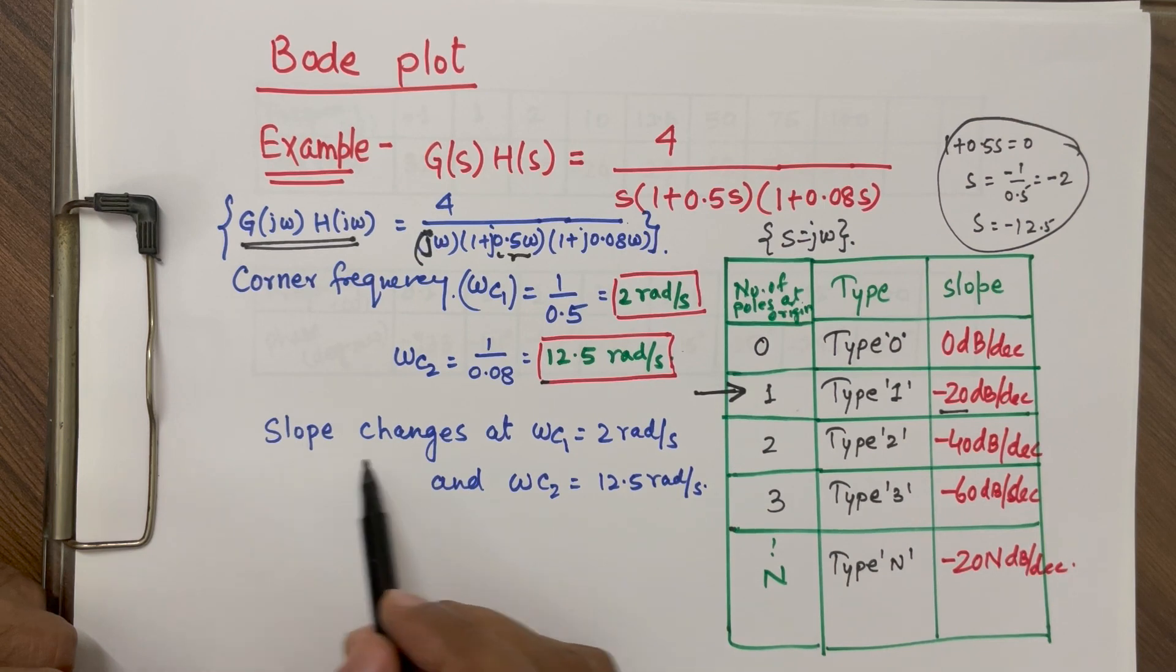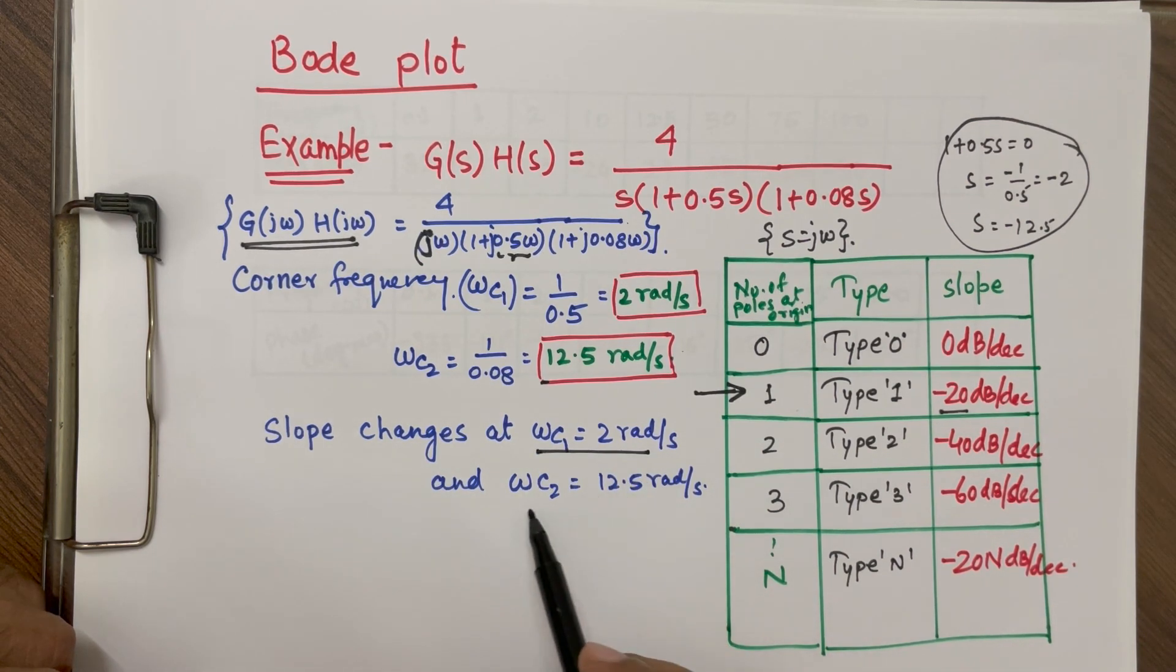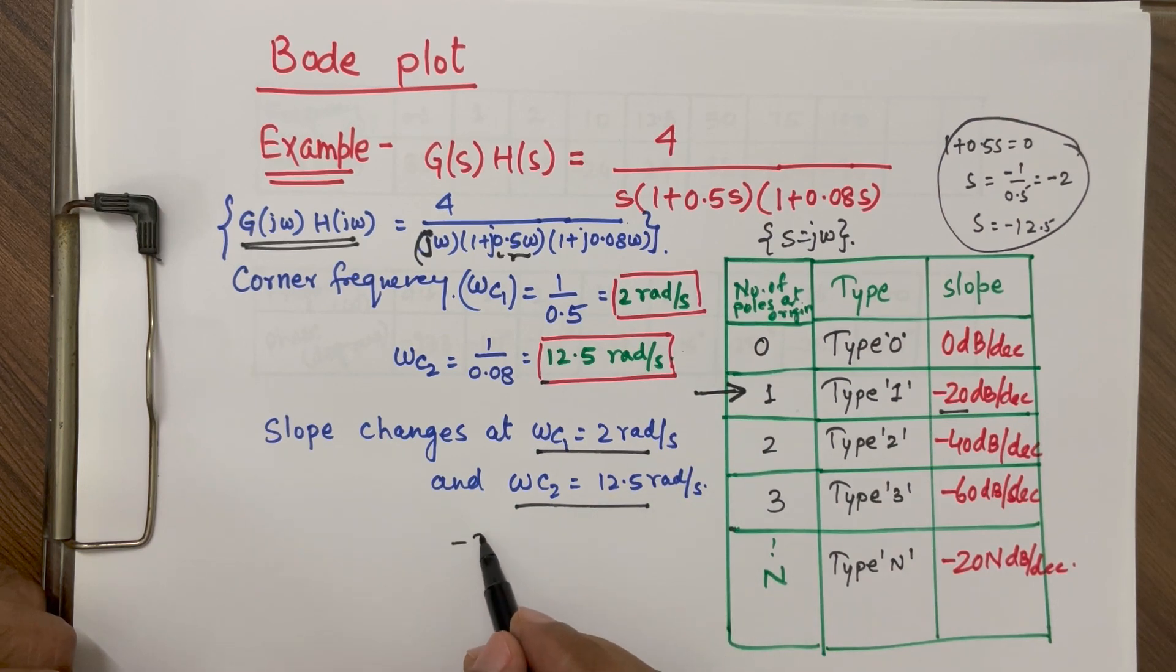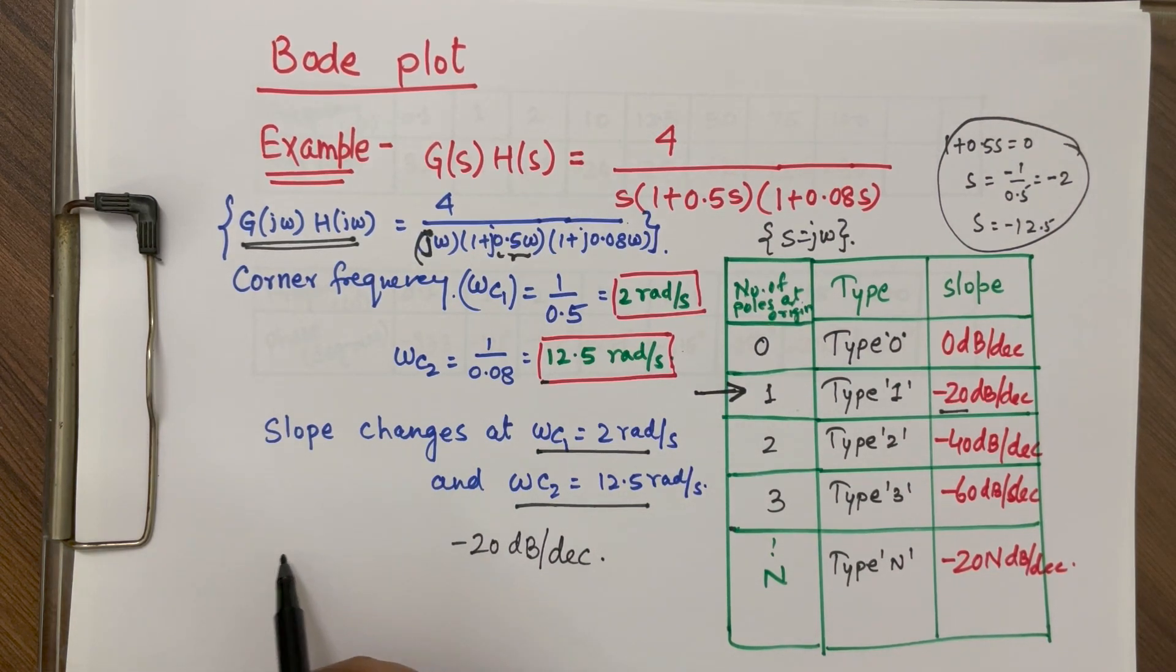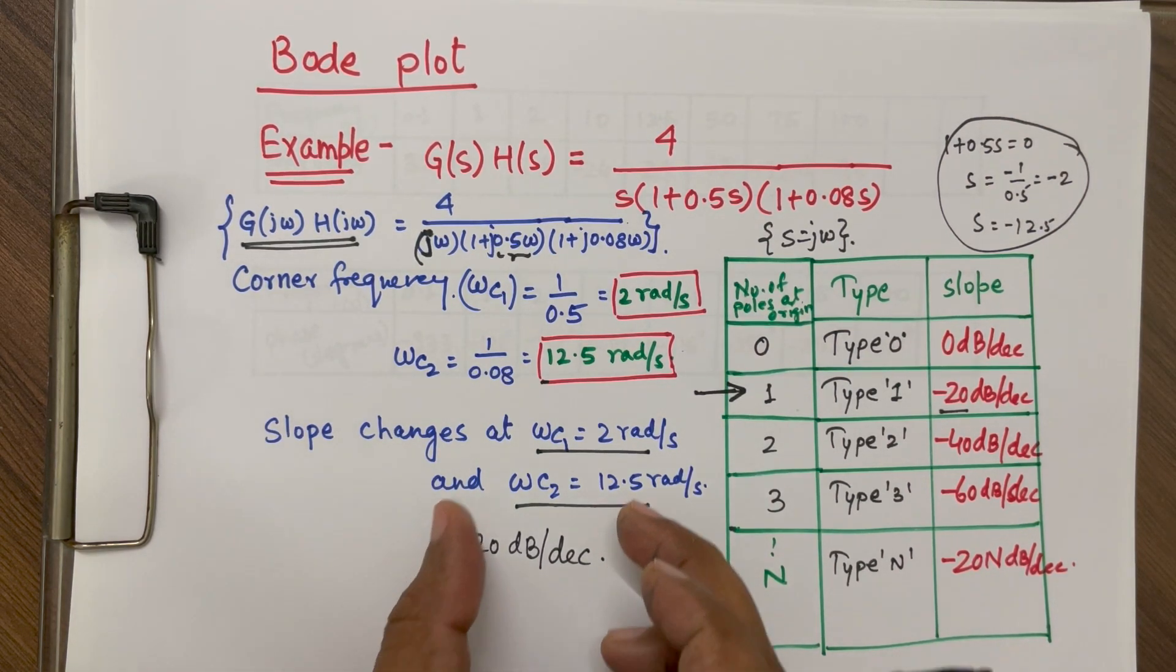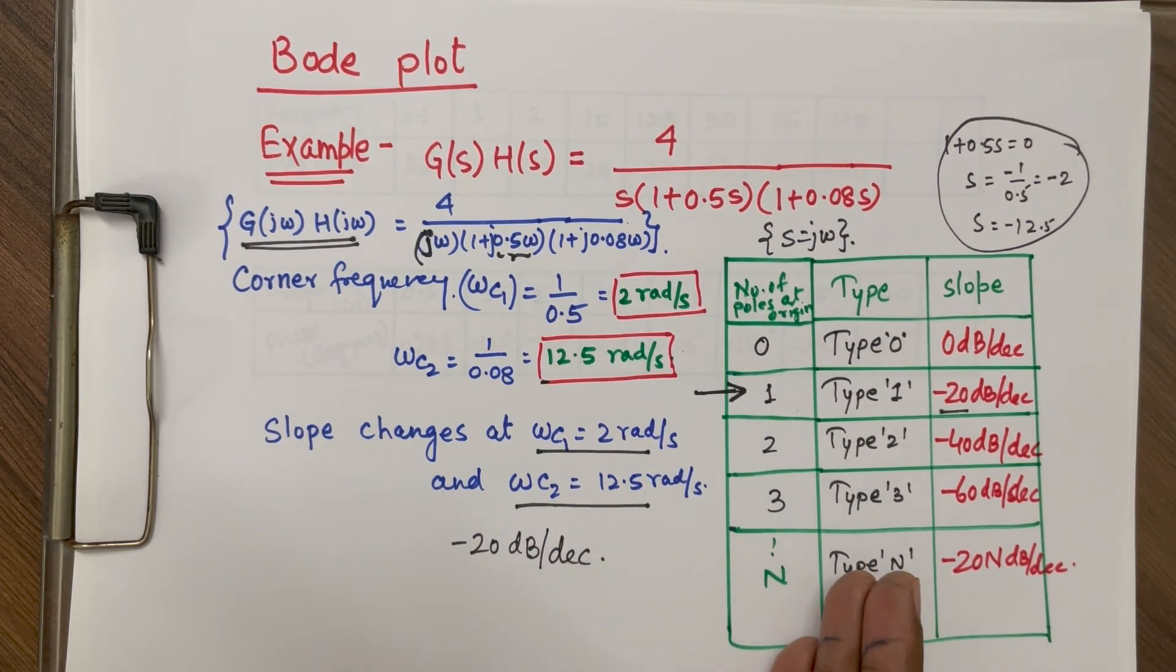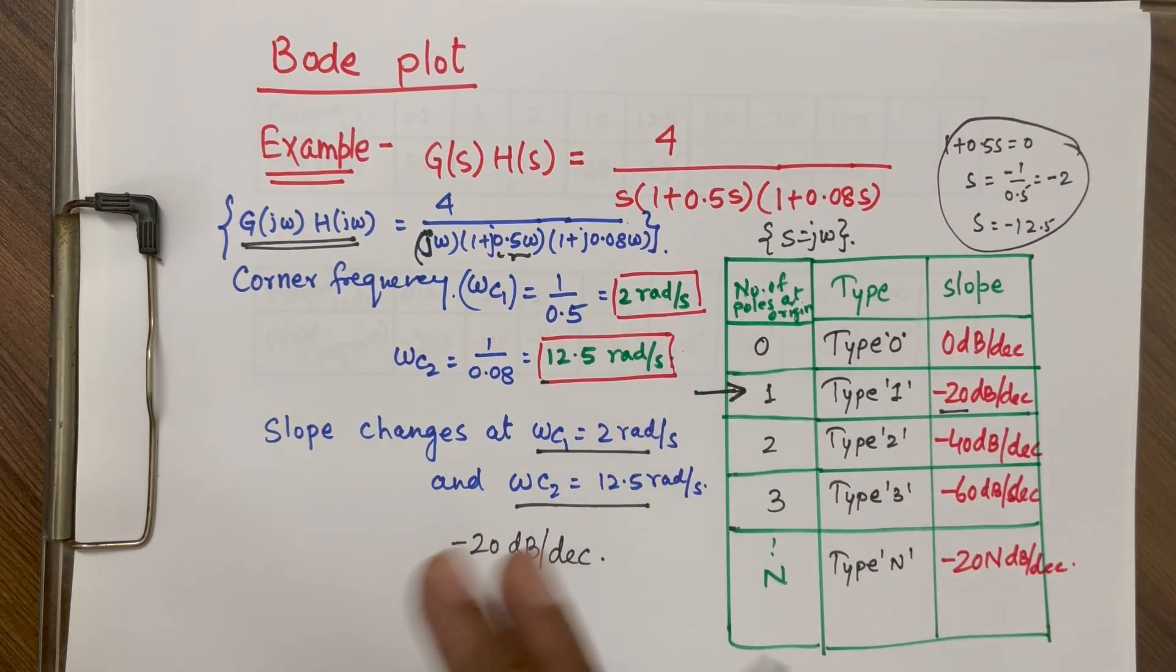So whenever there is corner frequencies, slope will again change by minus 20 dB per decade. Means if it is already minus 20 dB per decade, at corner frequency, it will become minus 40 dB per decade. Next corner frequency, it will become minus 60 dB per decade. So these are the few things you need to know.